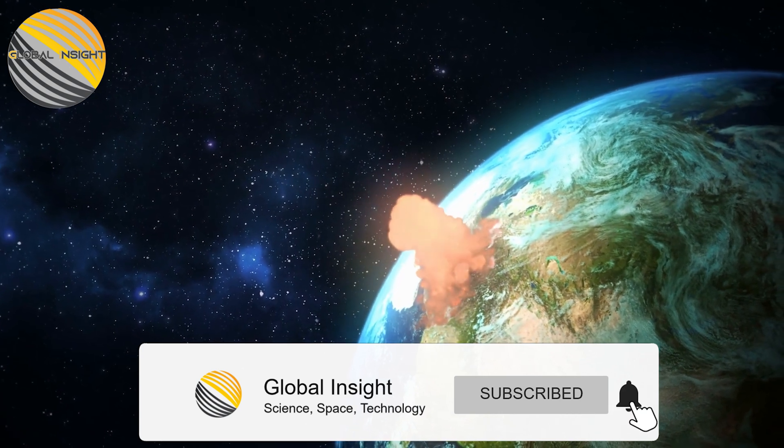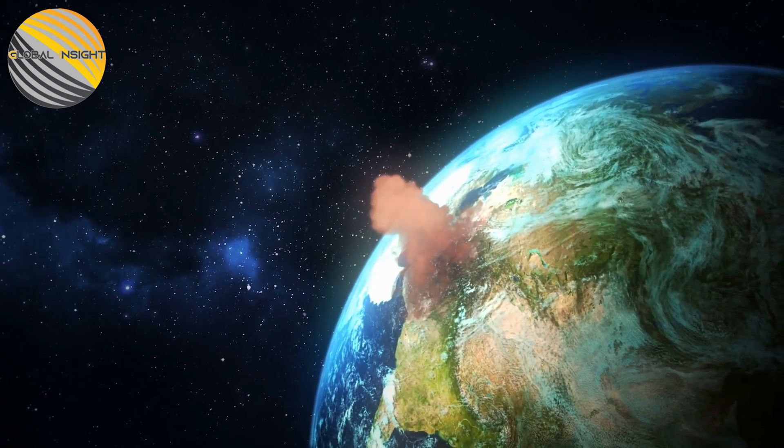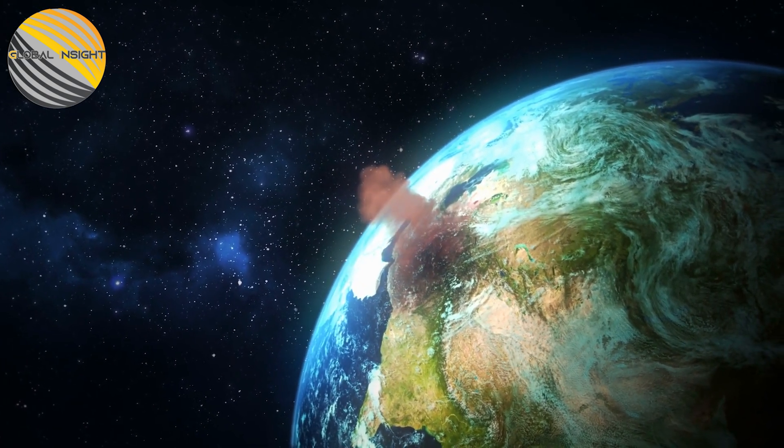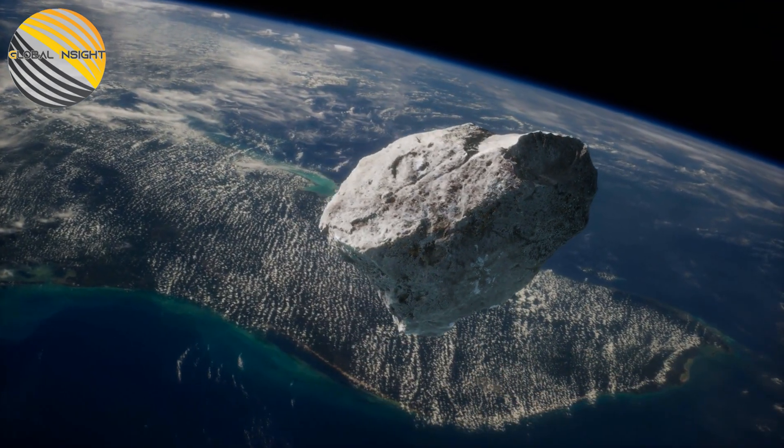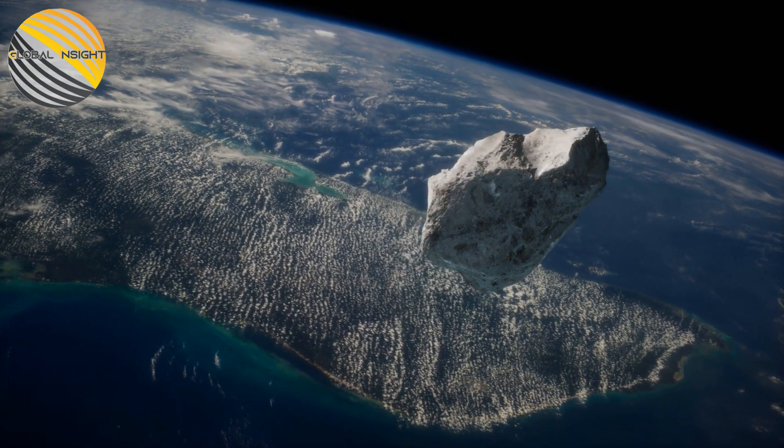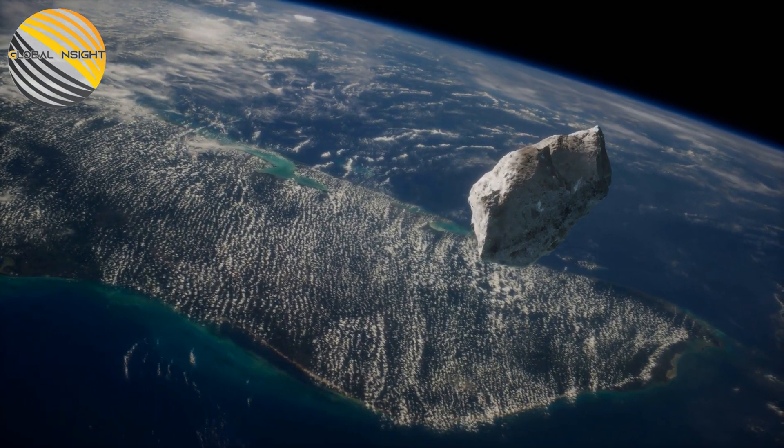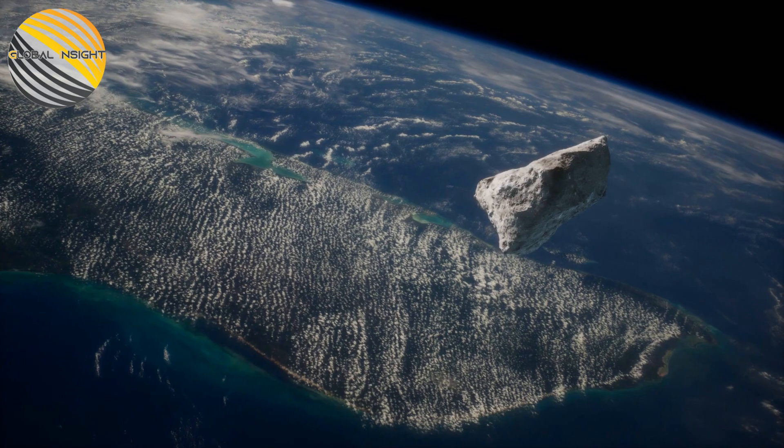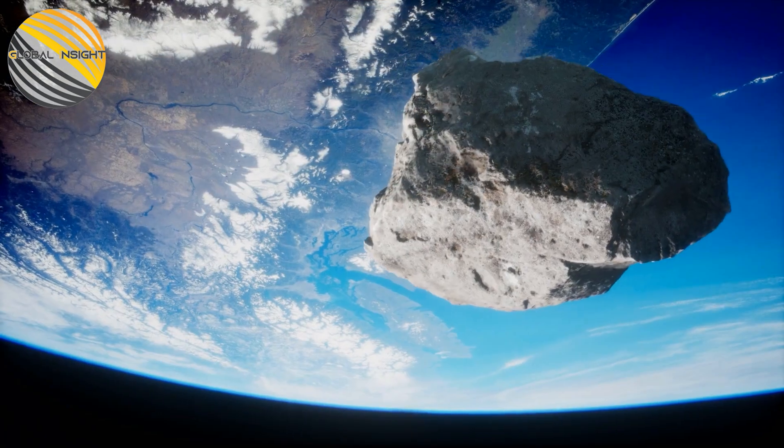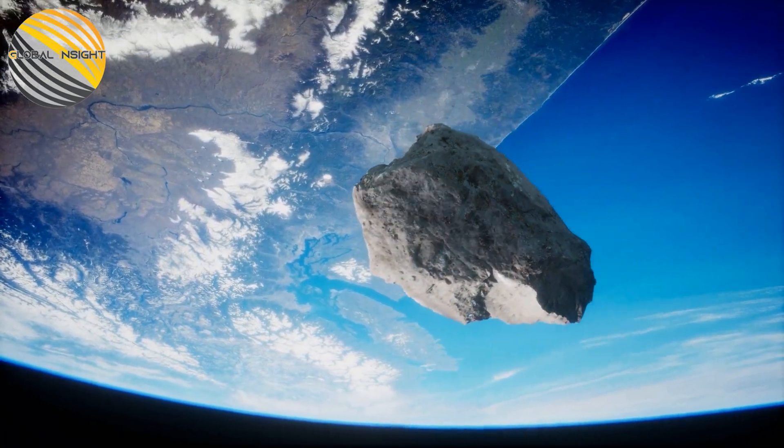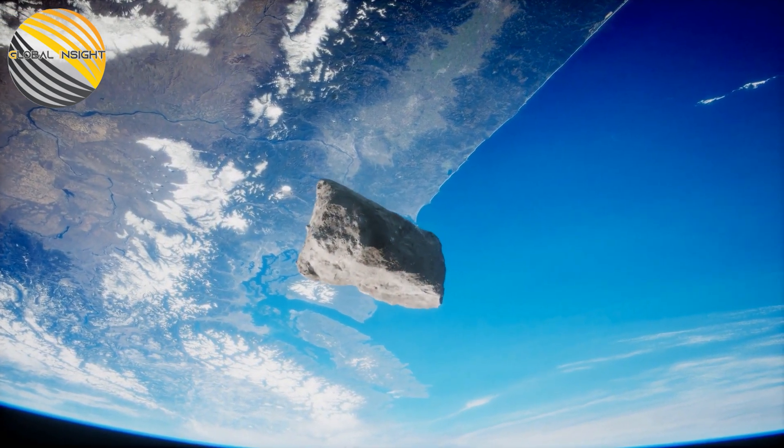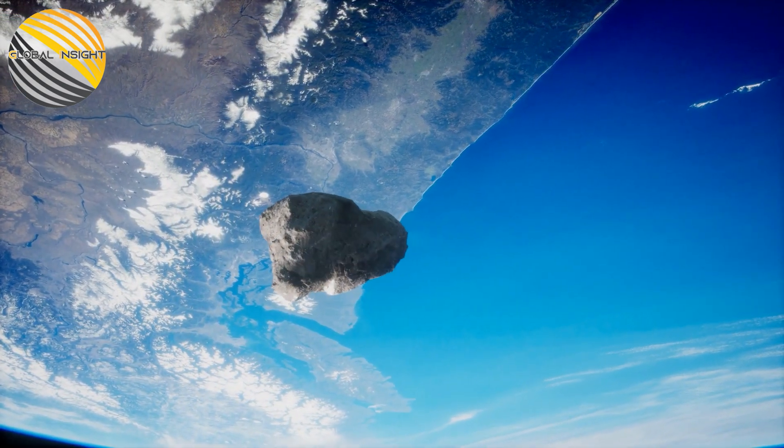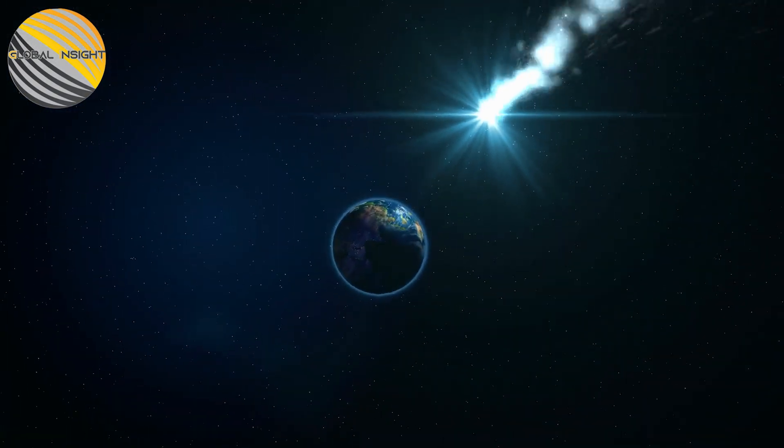A recent NASA mission dramatically demonstrated that humans can intentionally alter an asteroid's trajectory. The DART, Double Asteroid Redirection Test, mission of NASA brought a spacecraft the size of a vending machine into collision with Dimorphos, a moonlet of a minor planet with a diameter of 160 meters. The collision was deemed a complete success because it reduced Dimorphos' 12-hour orbital period by more than 30 minutes.